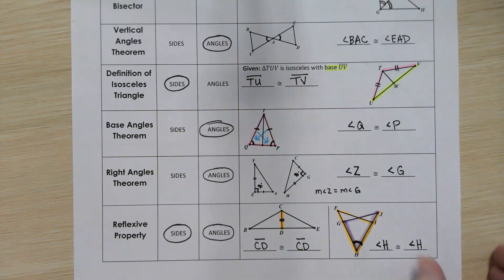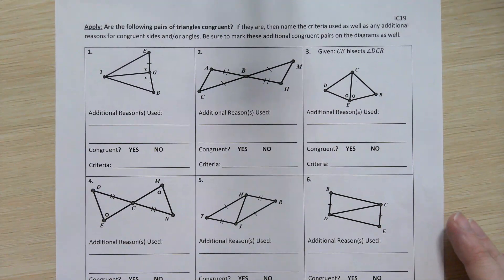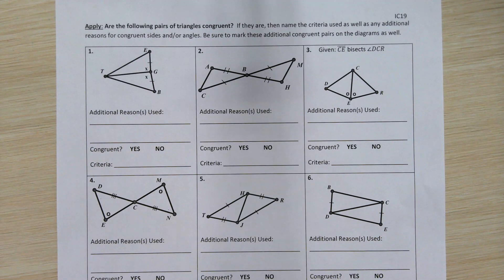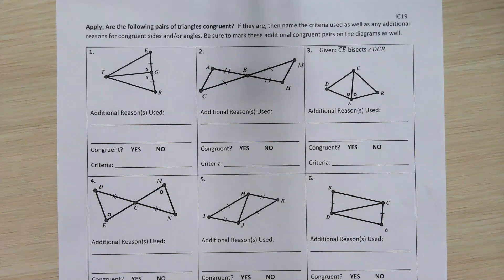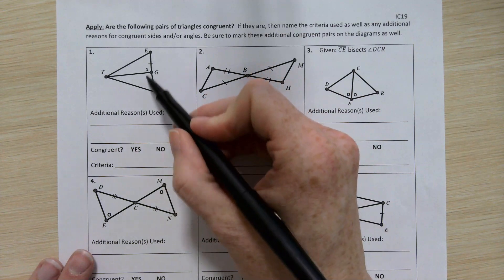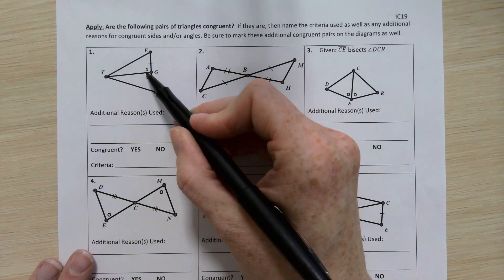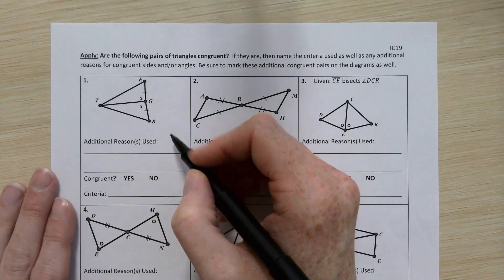Turning to the back of in-class 19, we have several examples where we decide whether triangles are congruent. Looking at example one, I see one pair of sides and one pair of angles marked. With just one S and one A, that's not enough for SAS, ASA, or AAS. Our options include SSS, SAS, HL, ASA, and AAS — we need more information.